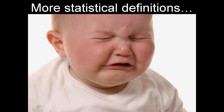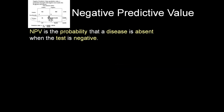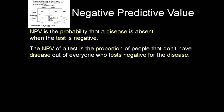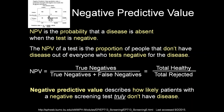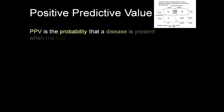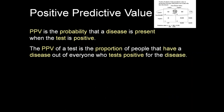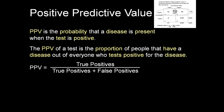Negative predictive value looks at the probability that a disease is absent when the test is negative — it is the proportion of people who don't have disease out of everyone who tests negative. Negative predictive value describes how likely patients with a negative screening test truly don't have disease. Positive predictive value is the opposite: the probability that disease is present when the test is positive, described as true disease over total identified. Positive predictive value describes how likely patients with a positive screening test truly have disease.